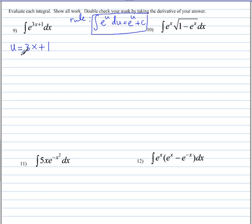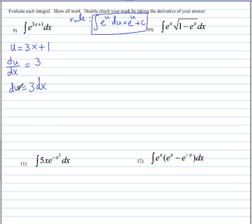The next step is to take the derivative of this u that we have picked. The derivative of u with respect to x is 3. So therefore du — multiplying both sides by dx — du is 3 dx. For the remaining problems, every time we find du, we're going to skip writing du over dx and just multiply the other side by dx.